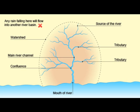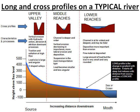In the upper course of a river, there is lots of vertical erosion with hydraulic action, abrasion and attrition as dominant processes. There is traction and saltation at high flow, load sizes are large and angular, and there are v-shaped valleys.